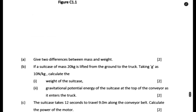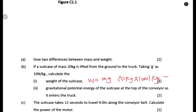If the suitcase of mass 20 kg is lifted from the ground to a truck, taking gravity as 10 N/kg, find the weight. Weight = mass × gravity = 20 kg × 10 N/kg = 200 newtons.